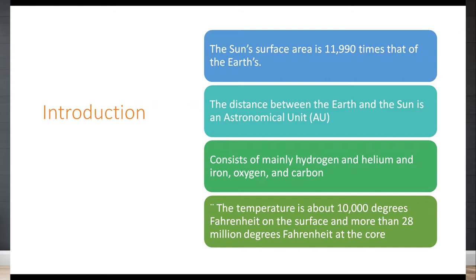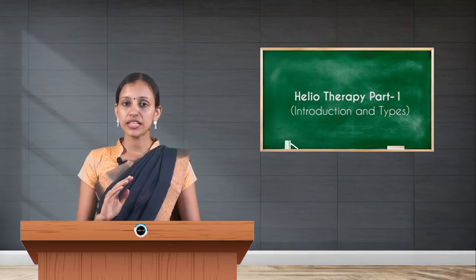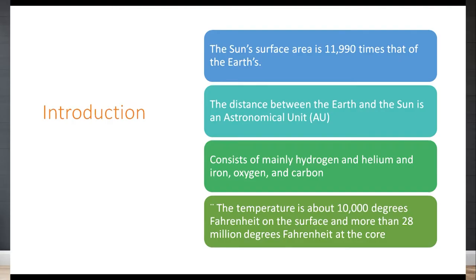The distance between the earth and the sun is measured in astronomical units. The sun mainly consists of hydrogen, helium, iron, oxygen, and carbon. The temperature at the surface is 10,000 degrees Fahrenheit, and it is more than 28 million degrees at the core.